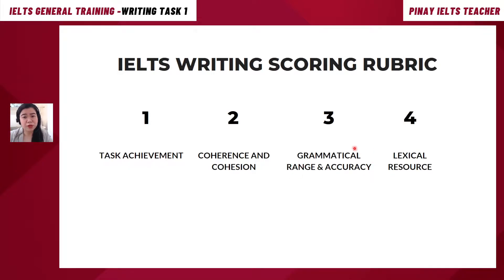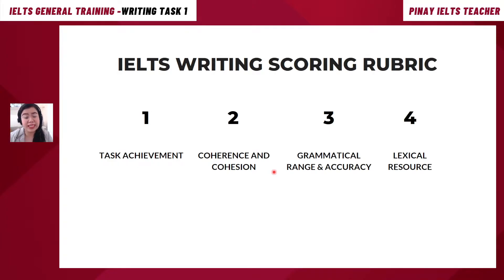Third is your Grammatical Range and Accuracy. The root word 'grammar' covers the rules of the English language — use of singular or plural, past tense, future tense — are they all accurate? That's grammatical accuracy. However, 'range' is different: we're talking about your use of complex sentence structures, going from simple to compound to complex. You also need to show flexibility in your grammar tenses — shifting from past to future when the idea calls for it.